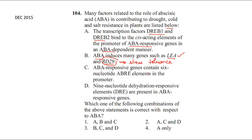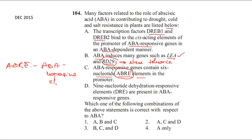ABA-responsive genes contain six-nucleotide ABRE elements - ABRE stands for ABA-responsive element. These responsive elements contain six nucleotides. This concept is also correct.